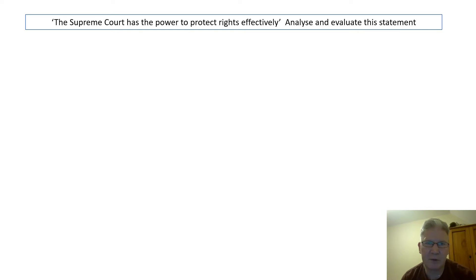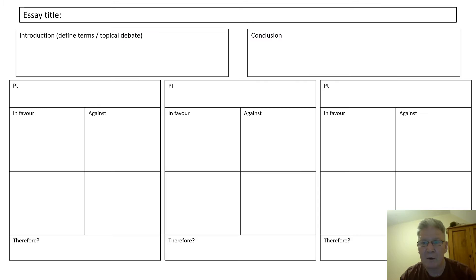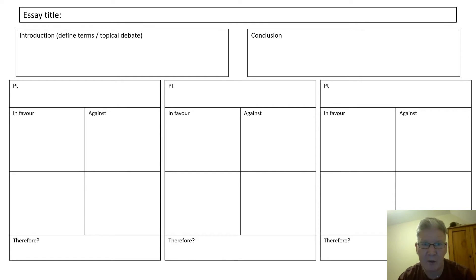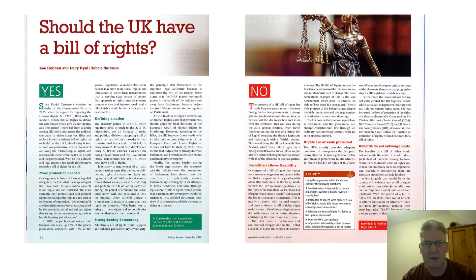I'm going to take on this question with the statement being: the Supreme Court has the power to protect rights effectively, and we're analyzing and evaluating this statement. I'm going to look at this in the context of a draft plan where you consider the introduction, consider the conclusion, and we look mainly at three different paragraphs with arguments for and against to show balance of argument with clear evaluation.